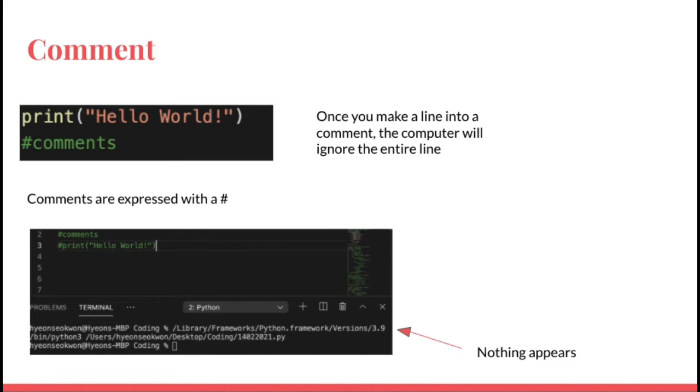Once you make a line into a comment, it will appear like this in the screenshot below in a dark green color and the computer will ignore the entire line, which means that the code will not appear in the console even after it runs successfully.